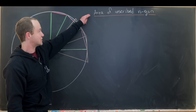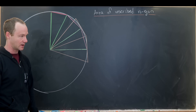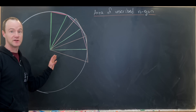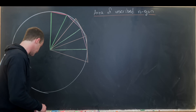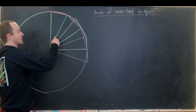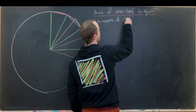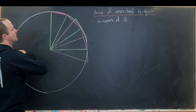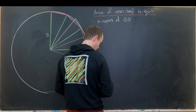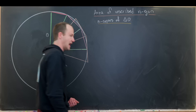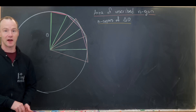The first thing we'll do is calculate the area of the inscribed n-gon, then calculate the area of the circumscribed n-gon, argue that the area of the circle is between those, and then take some sort of limit. The inscribed n-gon is going to be n copies of a triangle — let's call it triangle one. If we can calculate the area of triangle one, we can multiply by n to get the area of the inscribed n-gon.